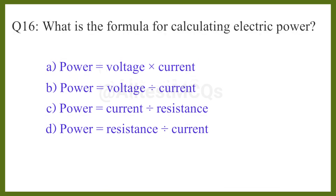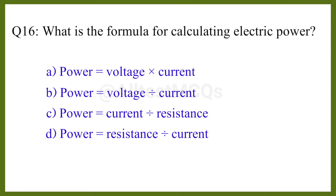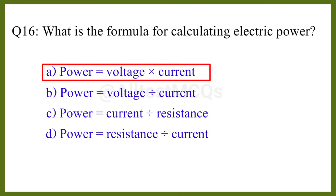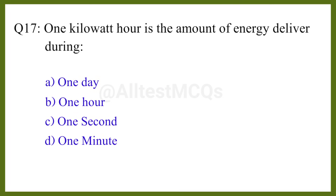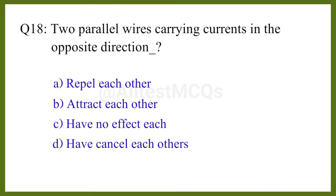Question number sixteen: What is the formula for calculating electric power? The correct answer is option A: power equals voltage multiplied by current. Question number seventeen: One kilowatt-hour is the amount of energy delivered during the correct answer is option B: one hour.